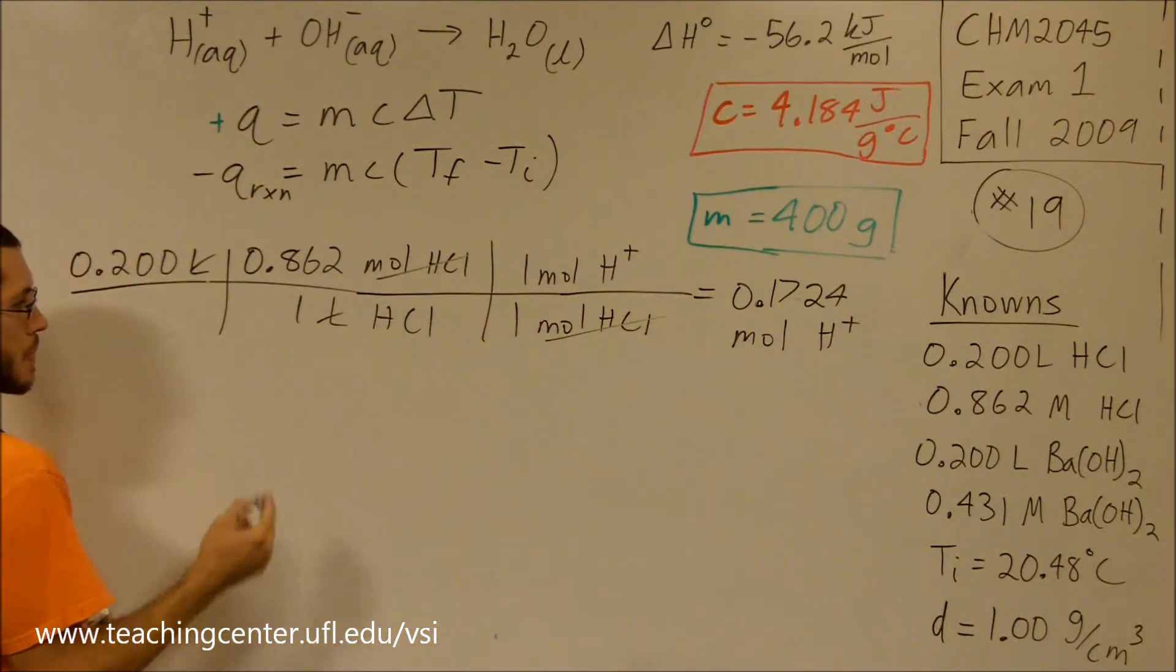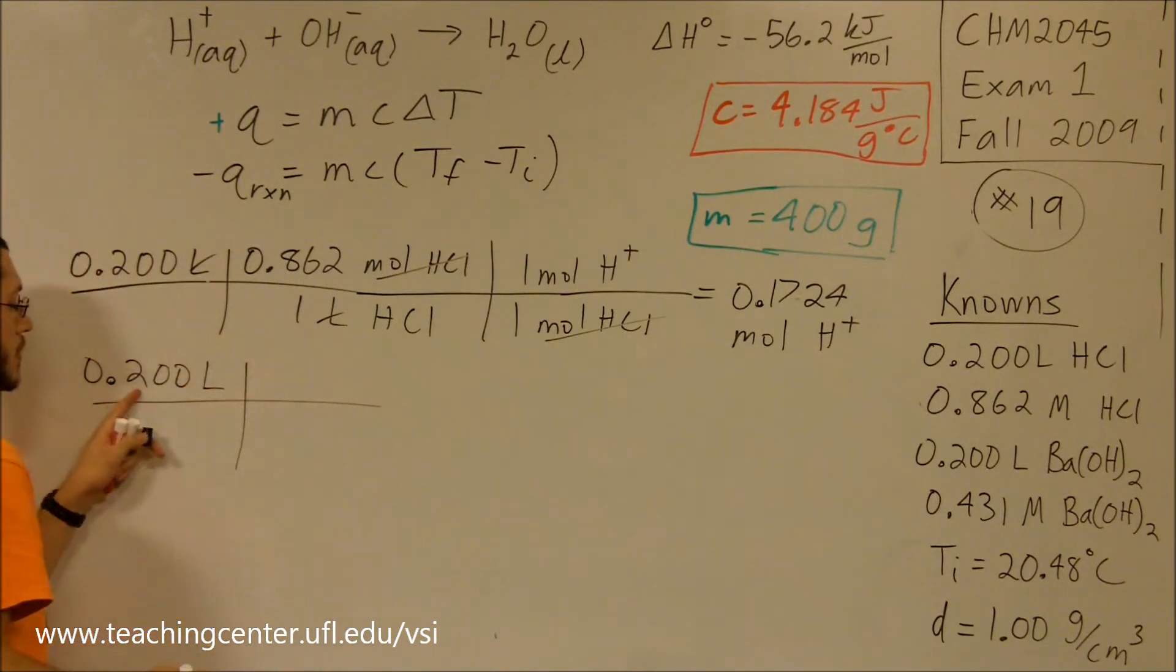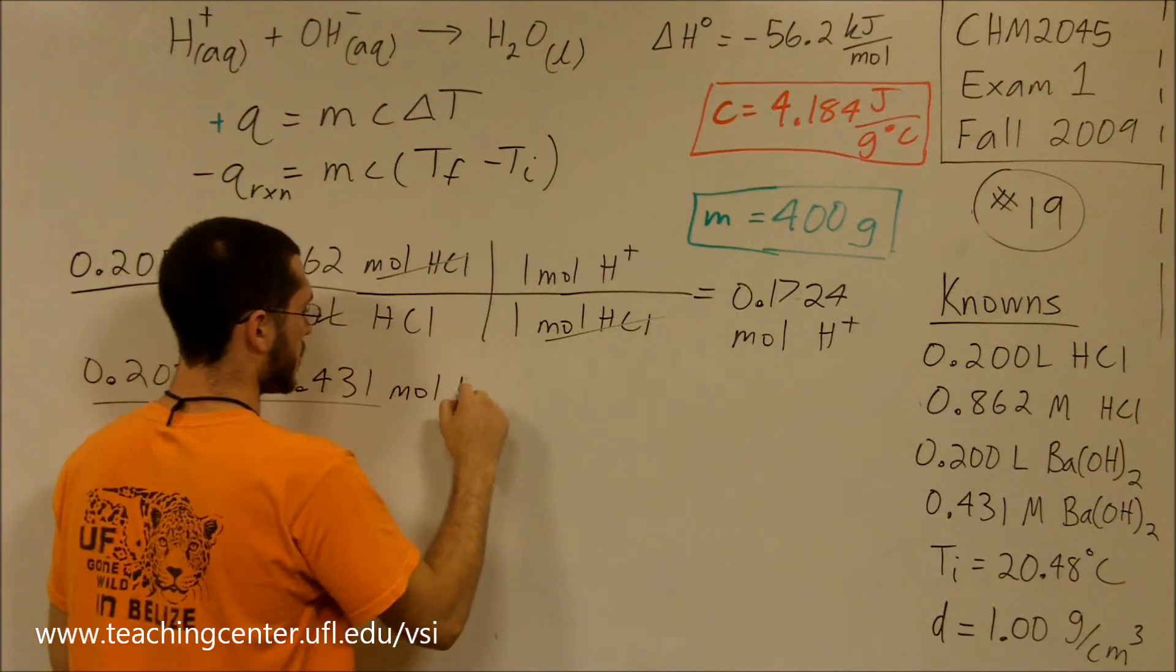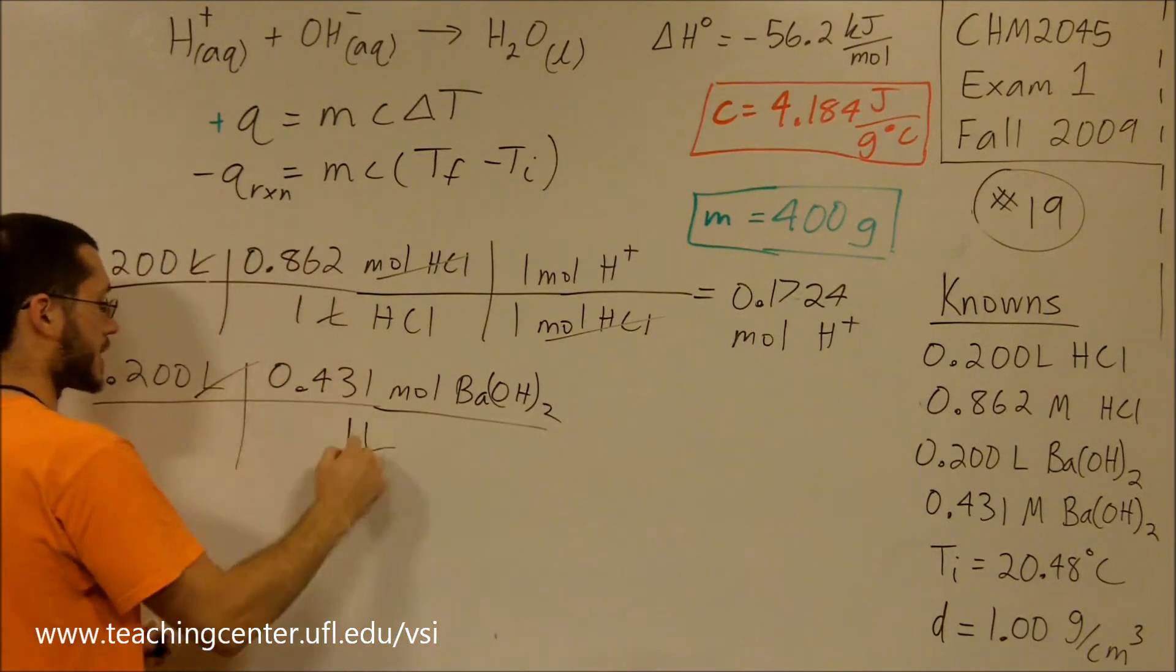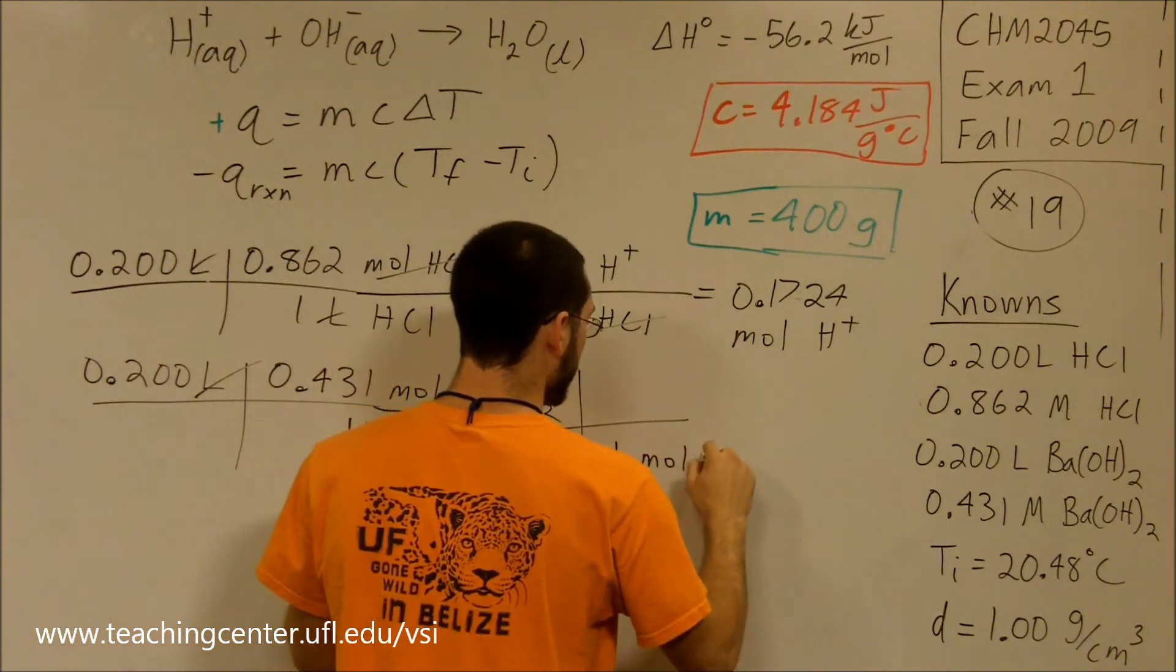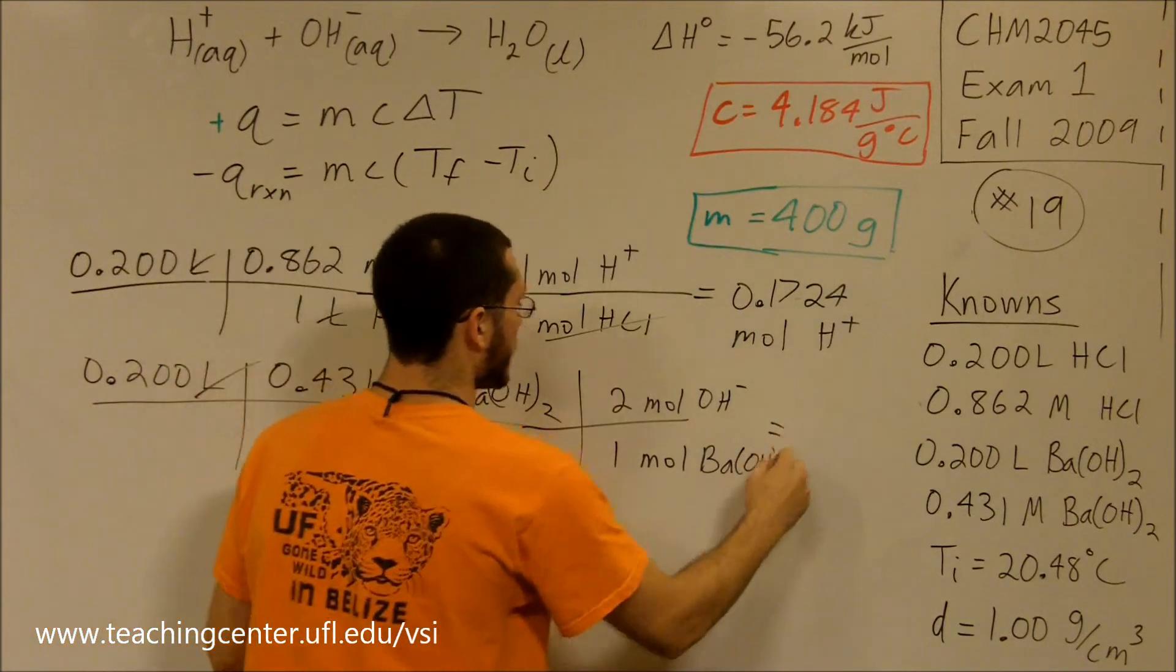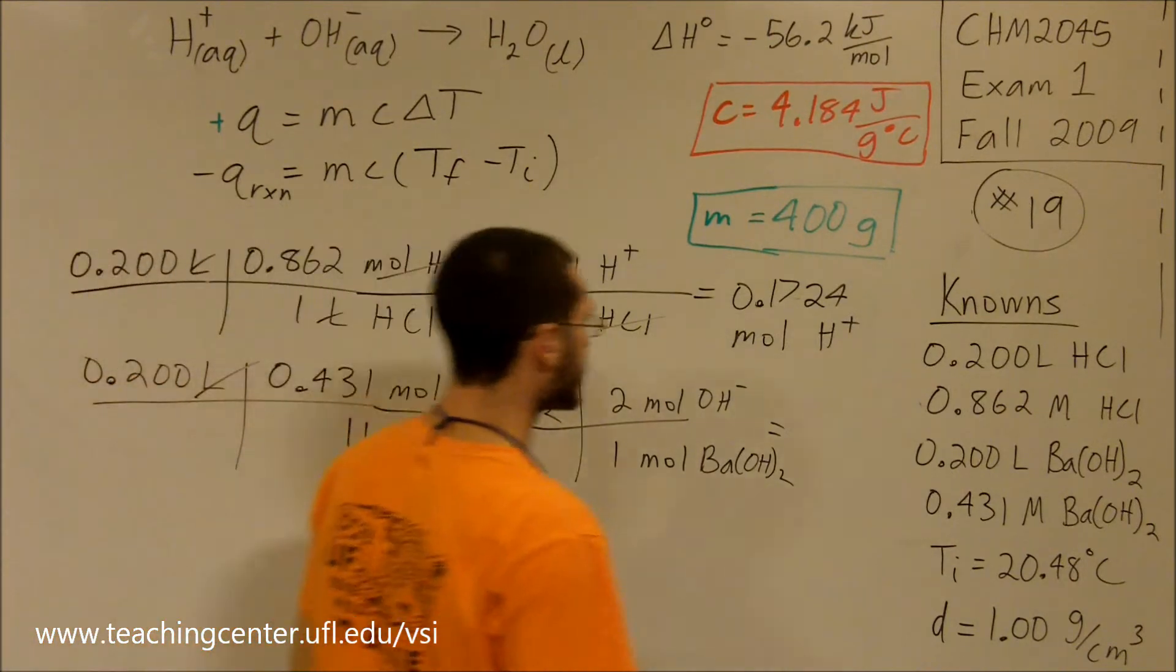Let's check how many moles of OH⁻ we have. By a similar process, we have 200 mL of barium hydroxide at this concentration. For one liter, the liters cancel out. For every one mole of barium hydroxide, I have two moles of OH⁻. This tells me how many moles of OH⁻ I have.